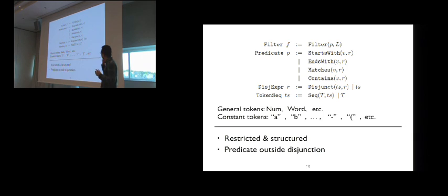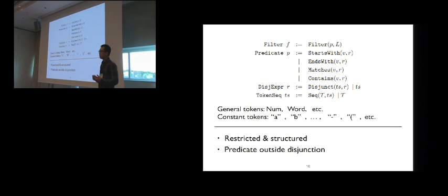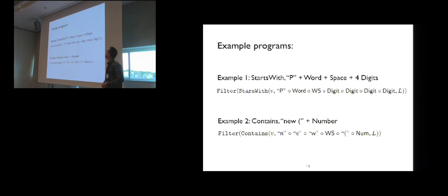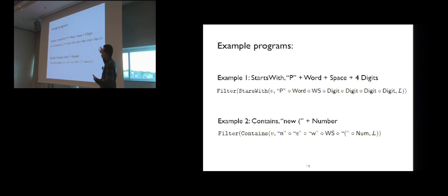To learn programs in this DSL, we need to learn two things: first, the type of predicate to use in the filter expression; and second, the disjunctive expression — the disjunction of token sequences. Looking at examples: for the first example, we pick the starts-with predicate with the token sequence constant P, followed by a word, a whitespace, and four digits. The second example uses the contains predicate with a different token sequence: new whitespace followed by a parenthesis and a number.